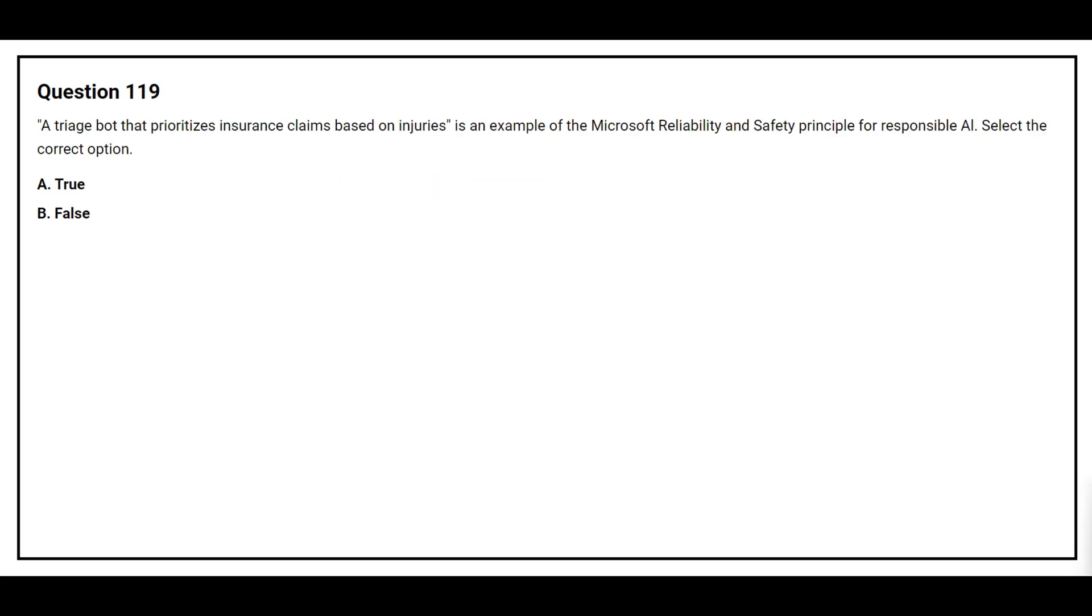Question number 119. A triage bot that prioritizes insurance claims based on injuries is an example of the Microsoft reliability and safety principle for responsible AI. Select the correct option. Option A, true. Option B, false. The correct answer is option B, false.